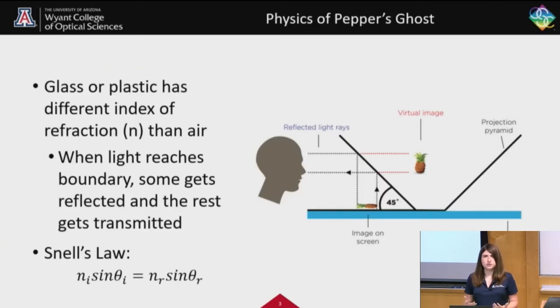So what is the physics of Pepper's Ghost? We have to acknowledge that glass or plastic has a different index of refraction than air. Because of this, when light reaches a boundary, or that interface between the air and the glass, some of it gets reflected and the rest of it gets transmitted. To understand this in more mathematical terms, we have Snell's Law in equation form over here, which is n_i sin(θ_i) equals n_r sin(θ_r).